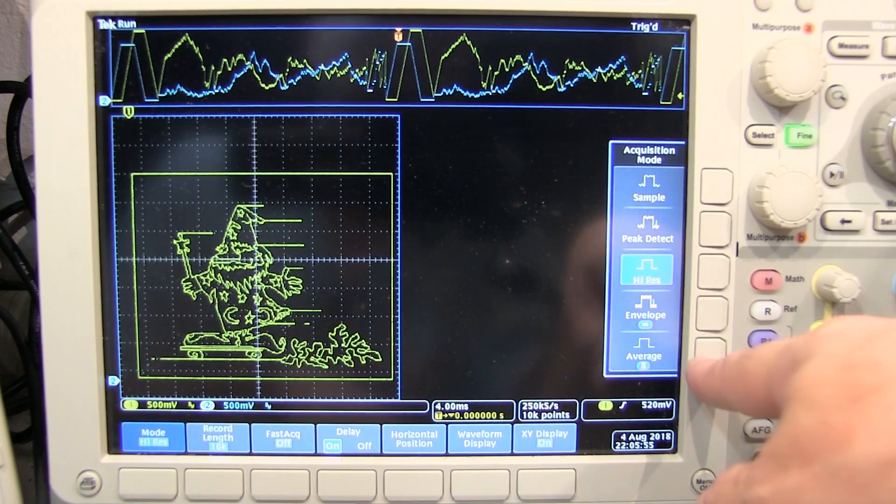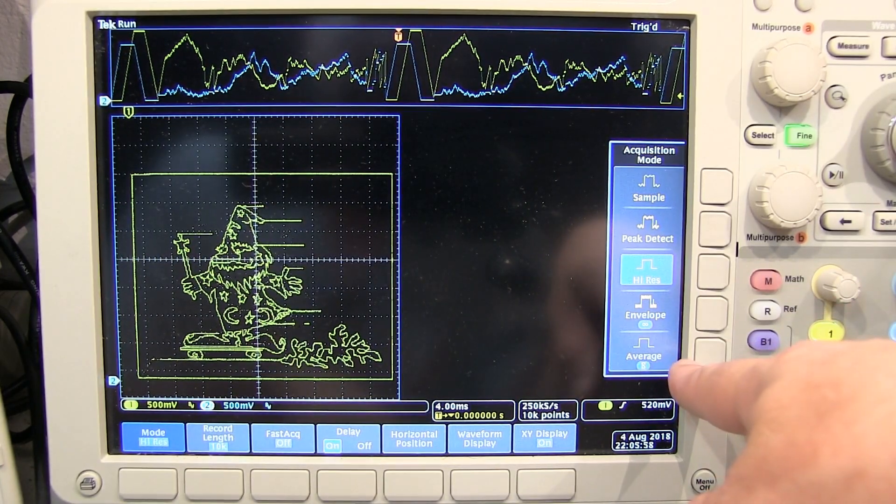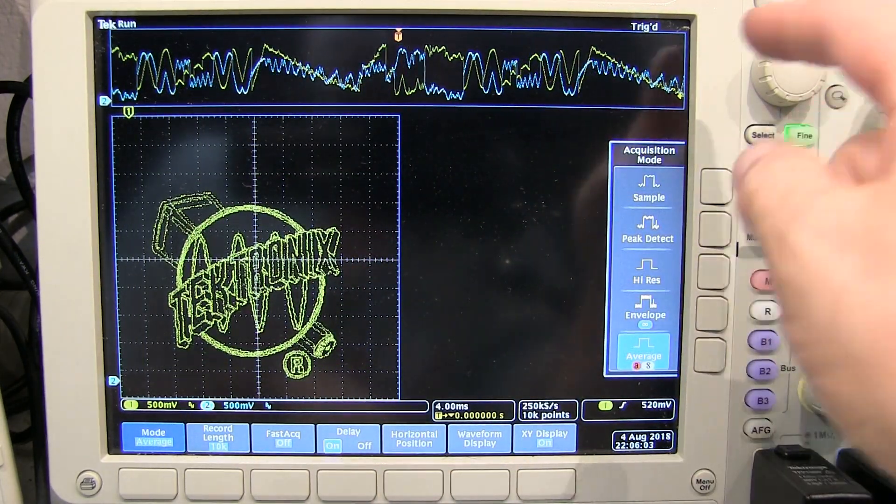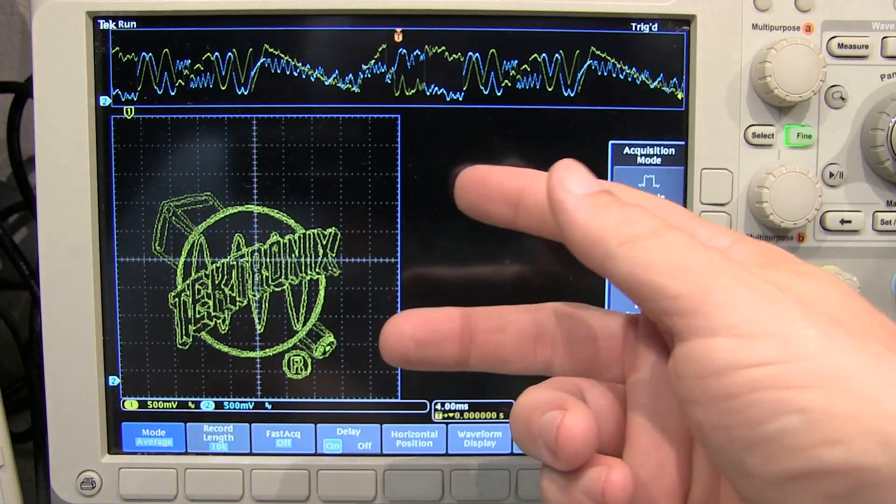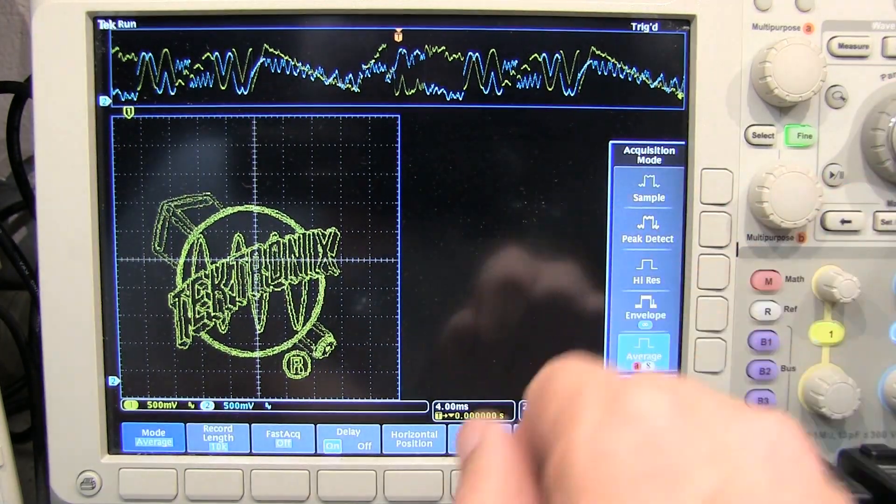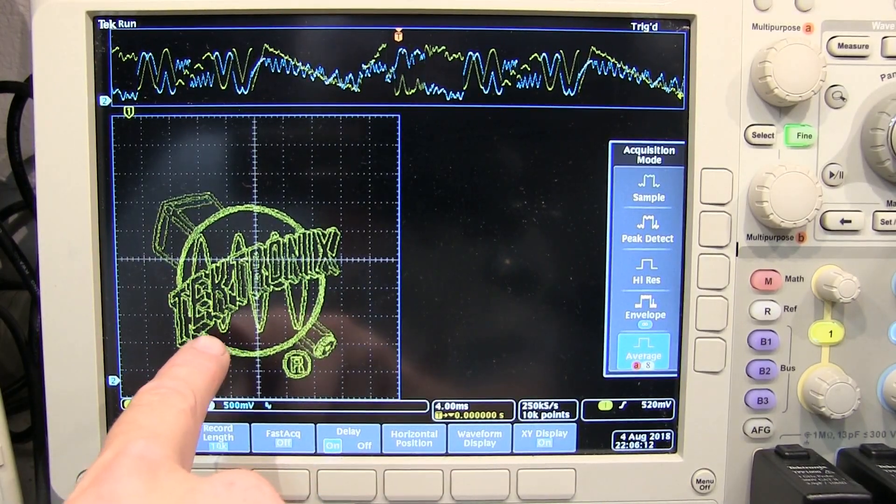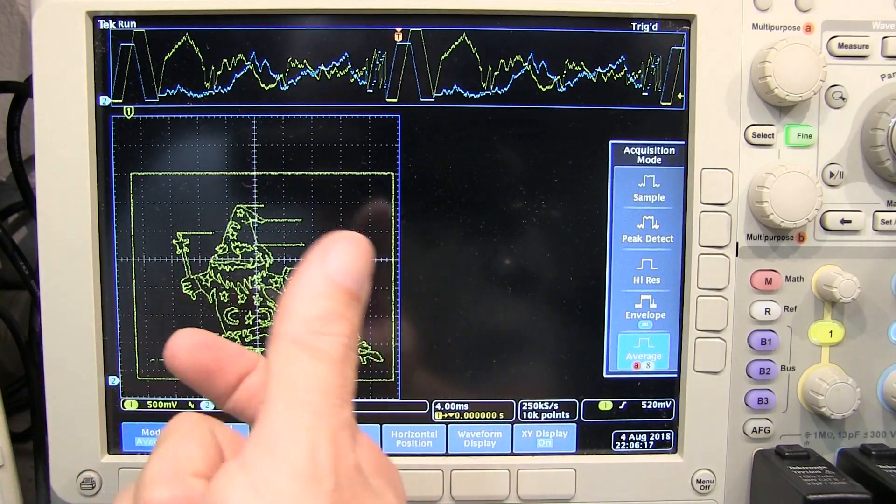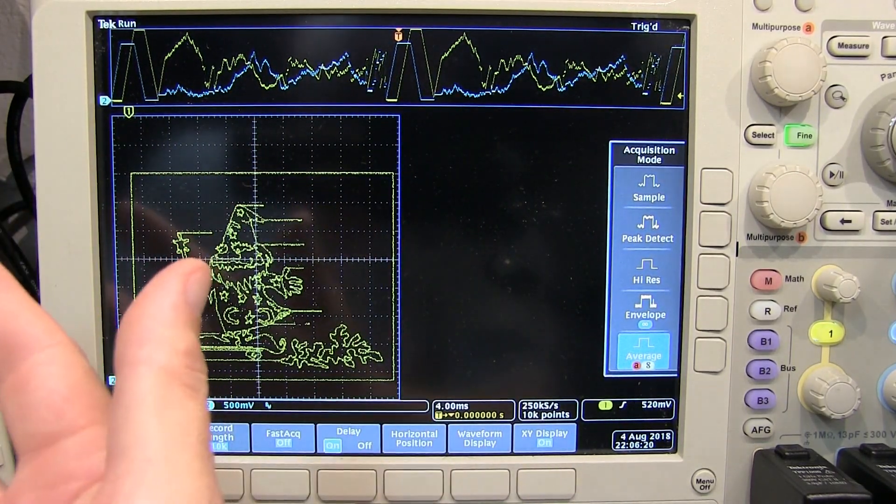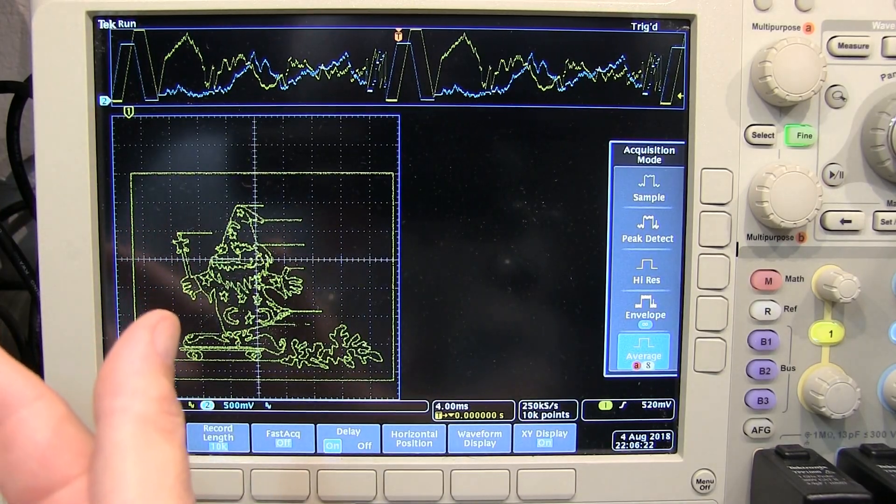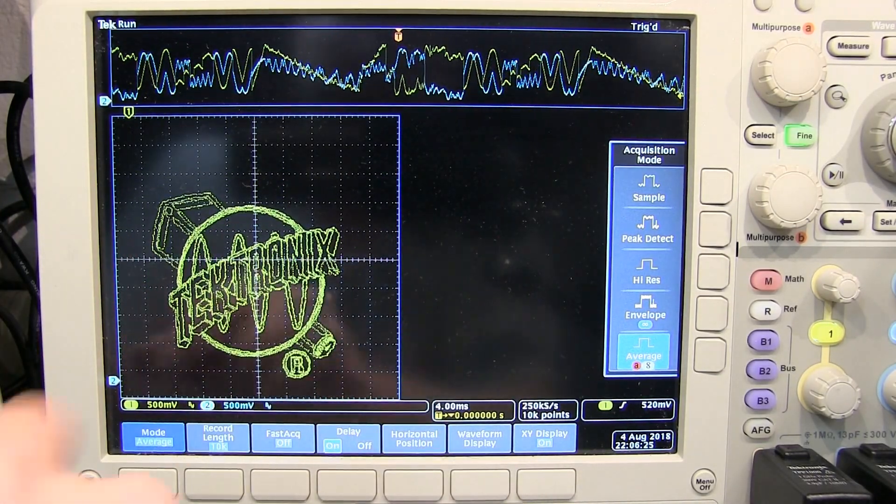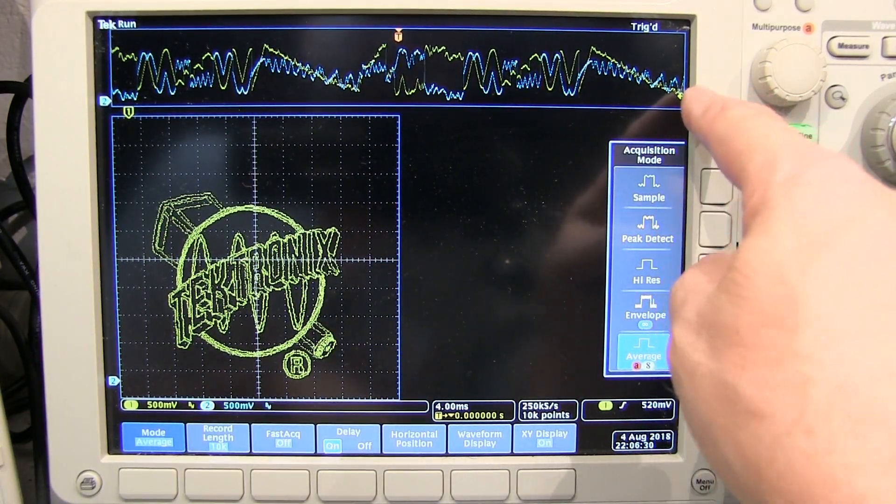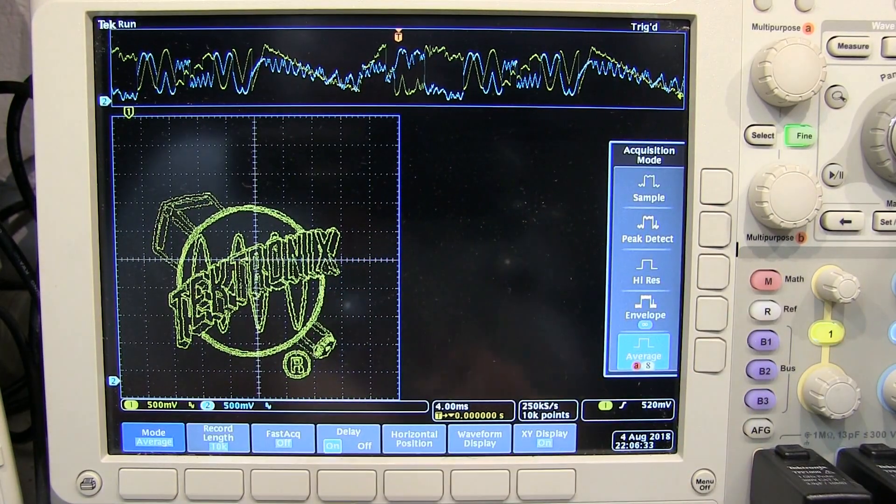Now since we've got a stable waveform that's unchanging because we're triggered on a particular part of the waveform, I could take advantage of doing acquisition to acquisition averaging. It'll give me about the same sharpness in the result, but it gives me an interesting effect when I transition from one graphic to another because I'll be averaging as the transition occurs. So we kind of get this little transition effect when we go from the Tektronix logo to the wizard, how it kind of morphs into the other because we're averaging from prior acquisitions of one graphic into the acquisition of the other. It's kind of a neat little thing that you get just by nature of doing a stable trigger and average over multiple acquisitions to build the XY mode.